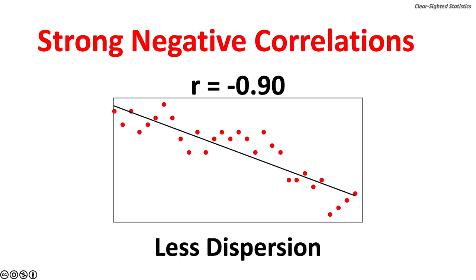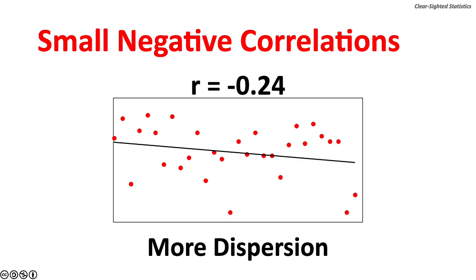In a strong negative or inverse correlation, as the X variable increases, the Y variable goes down. An R score of negative 0.90 is a very strong inverse correlation, with XY measures very close to the least squares line. In a weaker negative correlation, the XY measures are more dispersed from the least squares line.